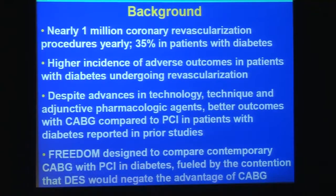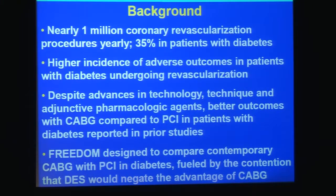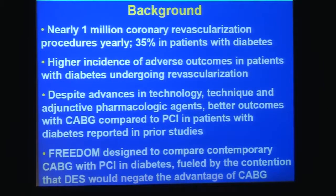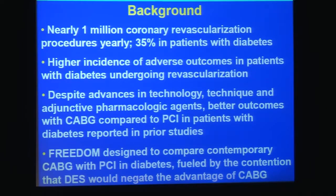FREEDOM was designed against the following background: in the United States alone, nearly one million coronary revascularization procedures are performed yearly, and 35% of these are performed in patients with diabetes. There is a higher incidence of adverse outcomes in patients with diabetes undergoing revascularization. Despite advances in technology, technique, and pharmacologic agents, better outcomes with CABG compared to PCI in diabetic patients had been reported in prior studies. FREEDOM was designed and adequately powered to compare contemporary CABG with contemporary PCI, fueled by the contention that drug-eluting stents would negate the advantage of CABG.